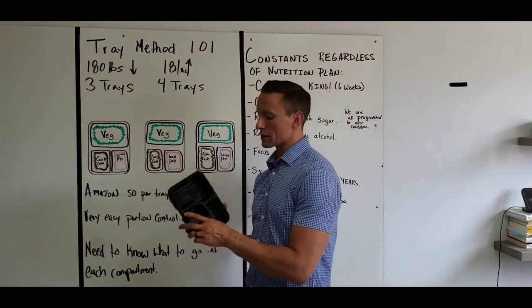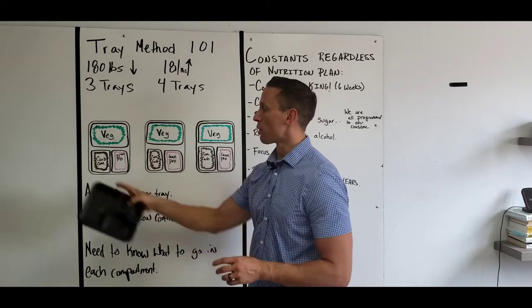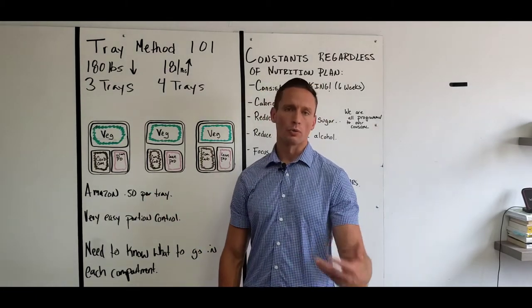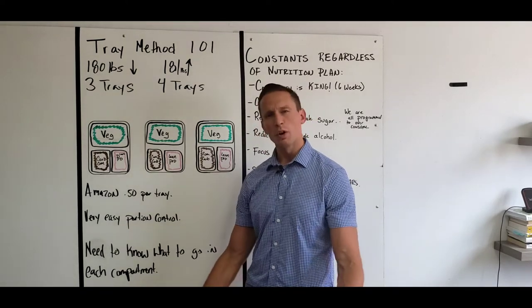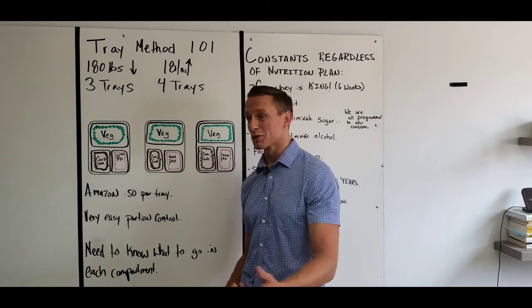In the next smaller portion, then we need two equal smaller pieces here. Number one is going to be a complex carbohydrate. So we could think of something along the lines of rice. We could go a sweet potato. We could even go a traditional potato. What we don't want, again, is simple sugars. We don't want table sugar in there.